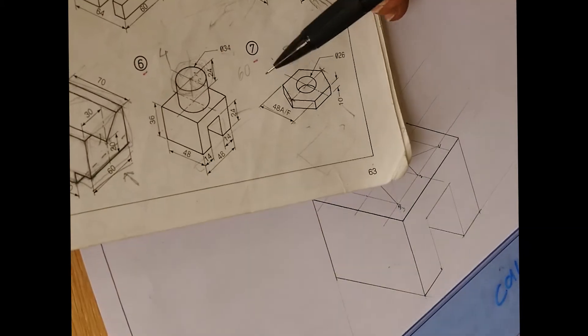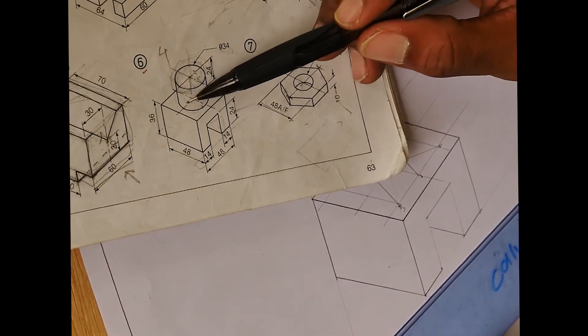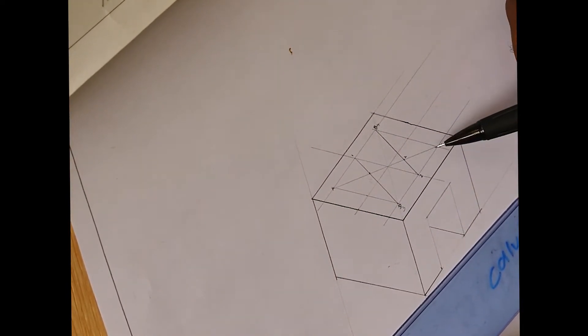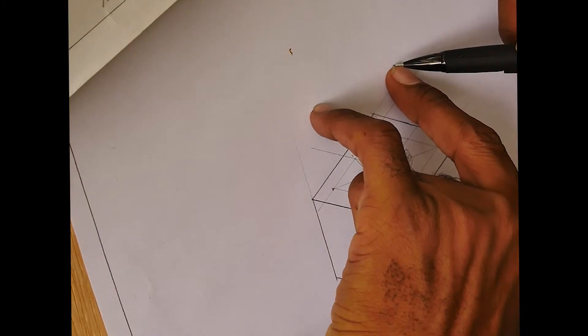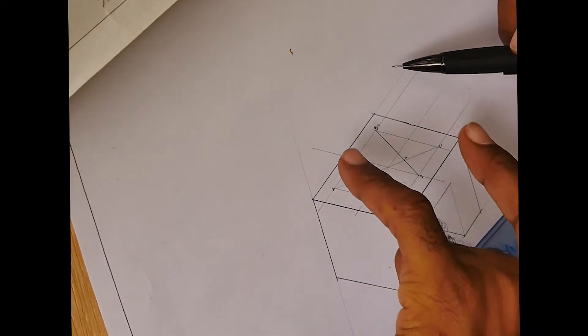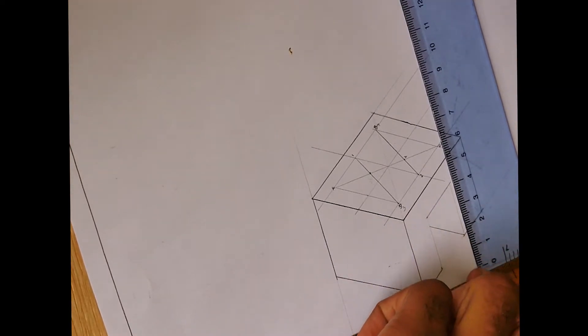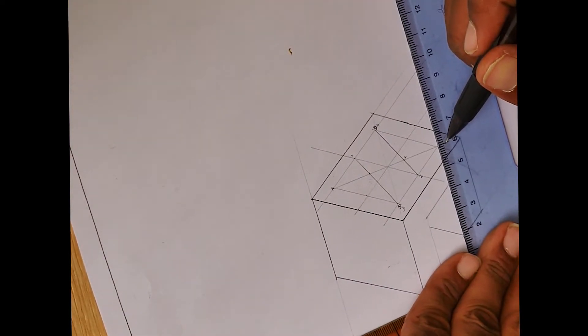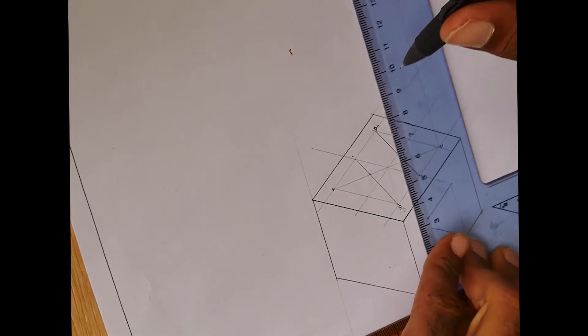But instead of doing that I'm going to actually transfer this information up 24 millimeters high. So that we can plot both circles at the same time. So I'm just going to transfer all of this information down here, 24 millimeters high. As we usually draw first and then measure after.